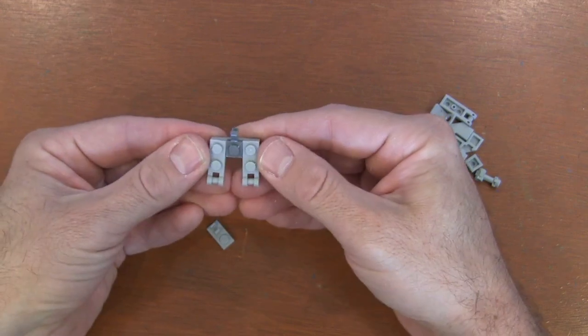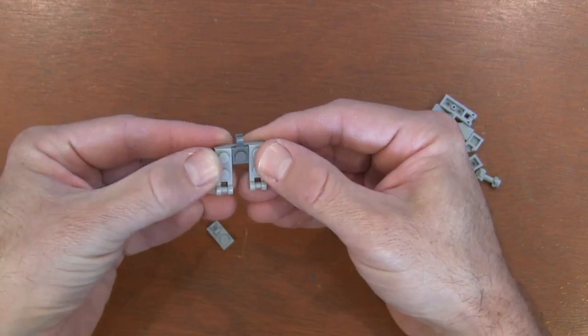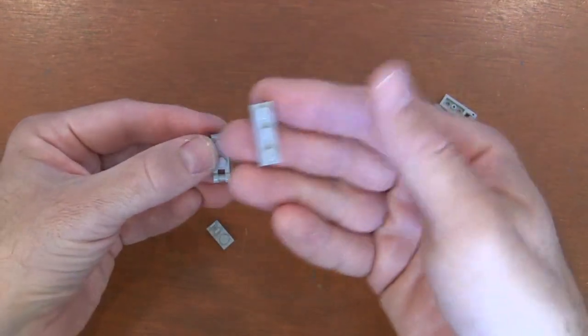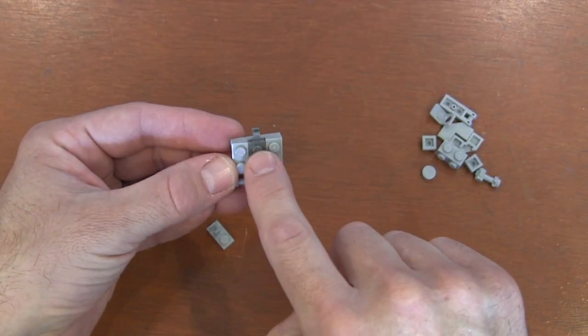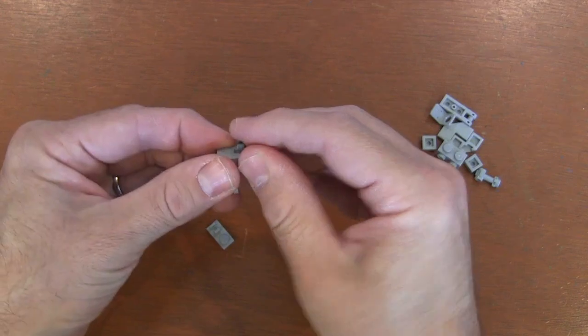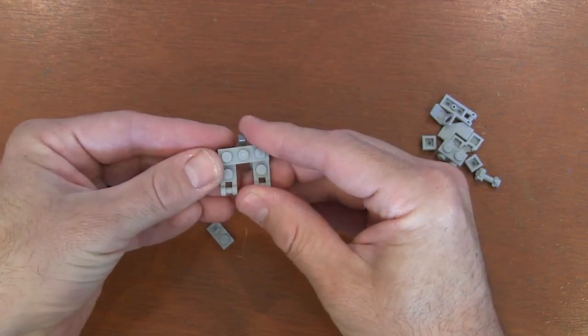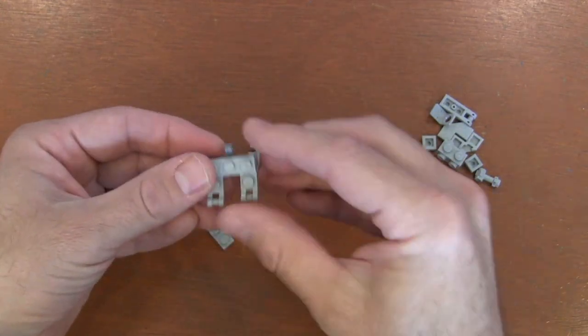And then once we have the legs on, we don't want them popping off or moving. So I'm going to get another 1x3 plate piece and just put that 1x3 plate piece right across the top, those top three studs. And now those legs are secure and they're not going to go anywhere. But I still need to do the feet.